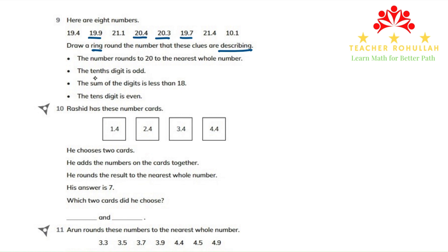The second point says the tenths digit is odd. So this one is odd, but this one is not odd. I will cross this. This one is also odd, and this one is also odd. The one which is crossed is 20.4.